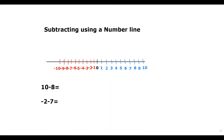As you can see, we have our number line right here. On the right side we have all of our blue numbers, which represent the positive numbers, and on the left side we have all of the negative numbers in red. Today we will be looking at two problems. Our first problem is 10 minus 8.